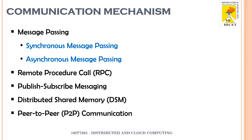Next, we want to understand the communication mechanisms followed in distributed systems. The first one is message passing, which is a popular communication model where independent computers exchange messages in the form of data or instructions. There are two kinds: synchronous and asynchronous message passing. In synchronous message passing, the sender has to wait until the receiver sends acknowledgement for the previous message before sending the next one.